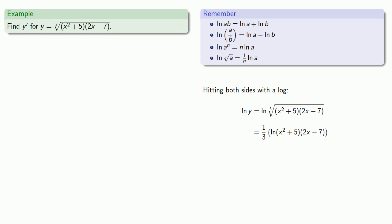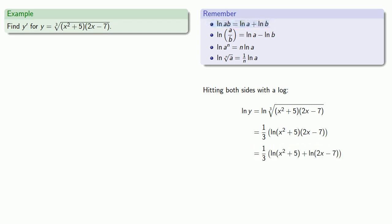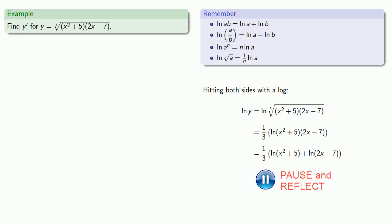The type of function is determined by the last operation performed, and here we're taking the log of a product, and we can simplify that. The type of operation is determined by the last operation performed, and here we have the log of a sum and the log of a difference. We check our rules of logs and see that the log of a sum isn't there, which means we can't simplify this expression any further.